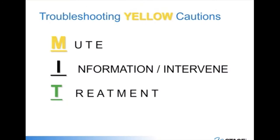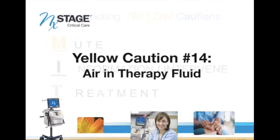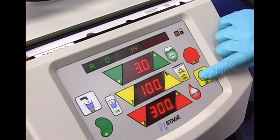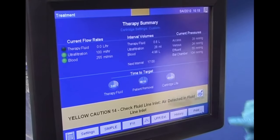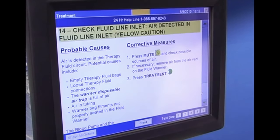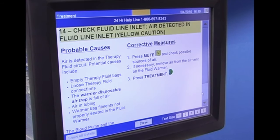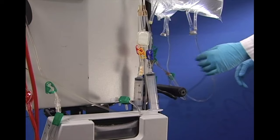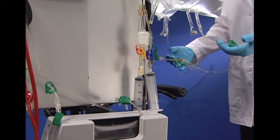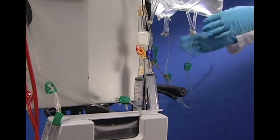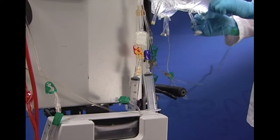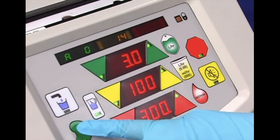Use the acronym MIT to resolve a yellow caution: Mute, Information, Treatment. Let's review yellow caution number 14. Press mute. Click the more information icon. In this example, the caution indicates that there is air in the therapy fluid or an occlusion in the therapy fluid line. Check possible sources of air or occlusion and correct them. If necessary, remove the air from the air vent on the optional fluid warmer. Press Treatment.